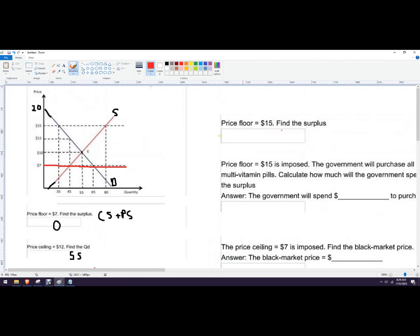Price floor $15, find the surplus. Okay. So we're going to go $15. Follow this over. So the consumers are going to be where it hits the demand curve. So the consumers can be 35 and the sellers are going to want to sell the difference, which is 80. So that's 45 units. So really it's the difference between quantity supplied and quantity demanded. So just find the difference.